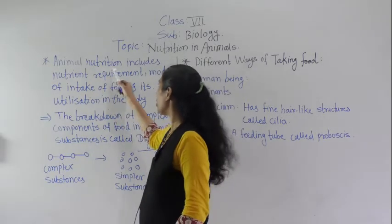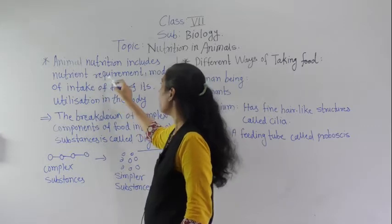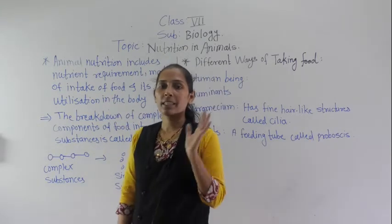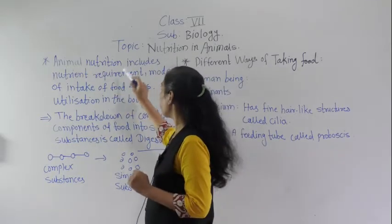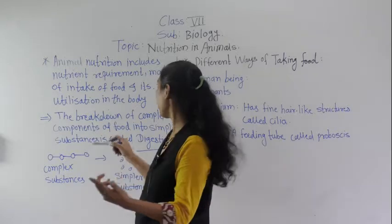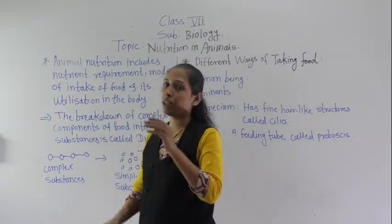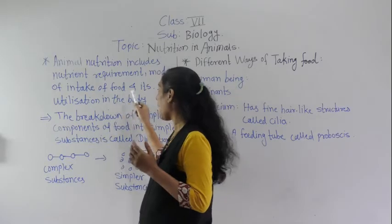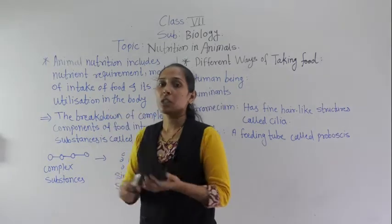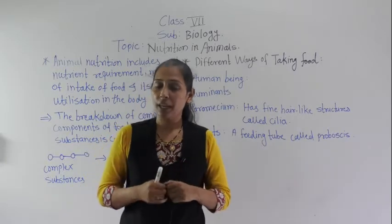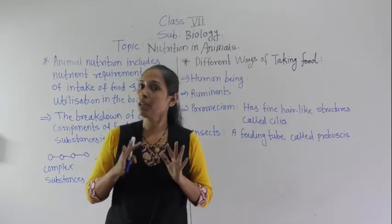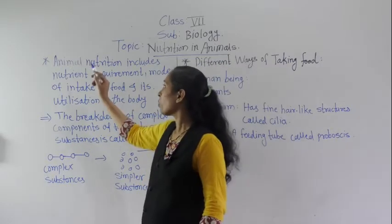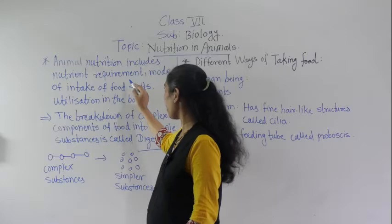So what exactly is animal nutrition? Animal nutrition includes nutrient requirements, mode of intake of food, and its utilization in the body. Different organisms have different types of modes to take in food. How nutrients are required, how they are taken in different ways, and how those nutrients get utilized by the body — all these things come under animal nutrition.